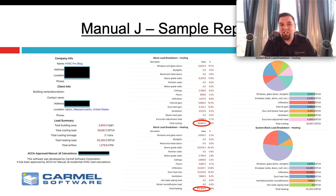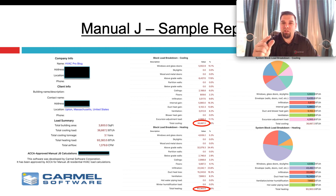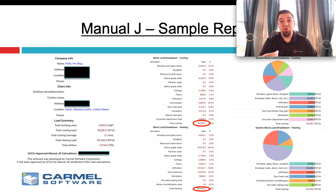What's nice about Carmel is it gives you great pie charts. Some things to look for are infiltration, ceiling insulation, and windows and doors. If you see a very small sliver for those items that impact the load the most, you should go back and double-check those numbers.